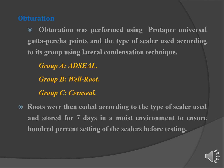Obturation was performed using ProTaper Universal gutta percha points, with the type of sealer applied according to its group using lateral condensation technique. Group A was obturated using AD Seal, Group B using Well Root, and Group C using Cera Seal. The roots were then coded and stored for seven days in a moist environment to ensure 100% setting of the sealers before testing.